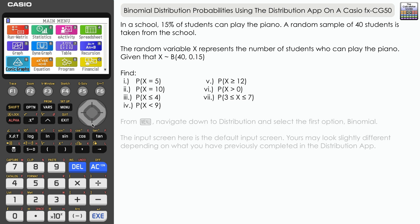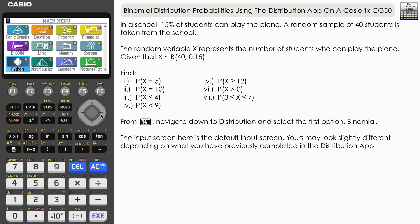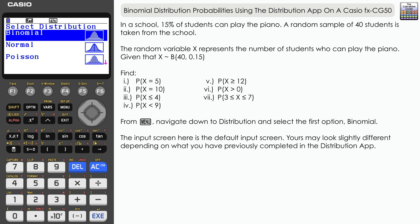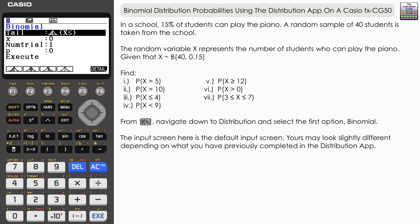From the main menu, navigate down to distribution and select the first option there, binomial. Now the input screen that I have here is the default input screen. Yours may look slightly different depending on what you last used the binomial distribution app for.